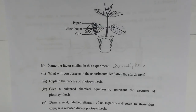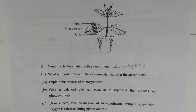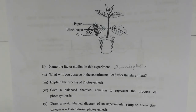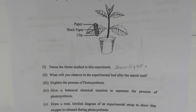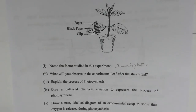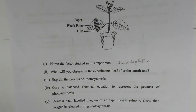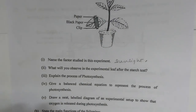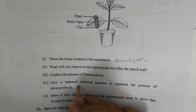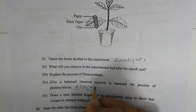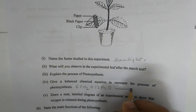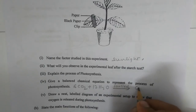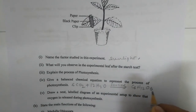Number three — explain the process of photosynthesis. Photosynthesis is the process by which plants manufacture their own food with the help of carbon dioxide and water in the presence of sunlight, giving out oxygen. Number four — give a balanced chemical equation for photosynthesis: 6CO₂ + 12H₂O in the presence of sunlight produces C₆H₁₂O₆ (glucose) + 6O₂ + 6H₂O.